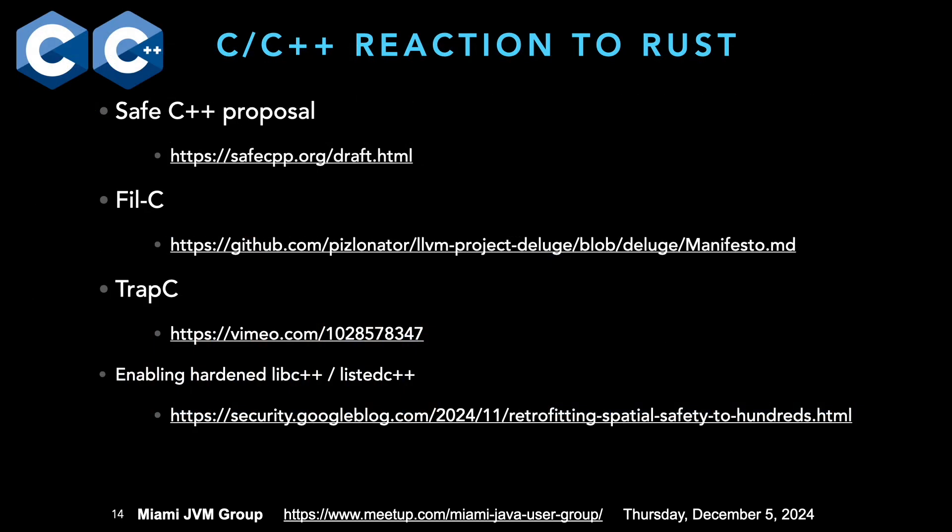That doesn't necessarily mean C and C++ are standing still. There's a proposal for safe C++, but there's no compiler — it's just a draft at this point and will probably take quite a while. There are also two C dialect implementations called Fill C and Trap C. Google is enabling bounds checkers and linters to reduce security vulnerabilities in C++ to get closer to Rust, while also progressing to memory-safe languages because they can't rewrite all that code in C and C++ overnight.